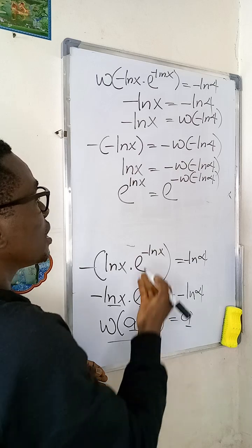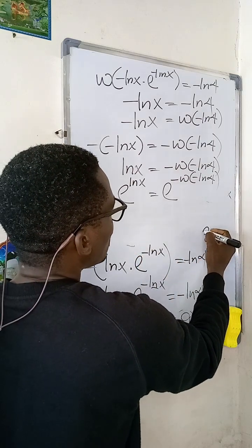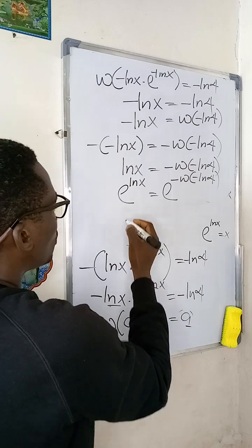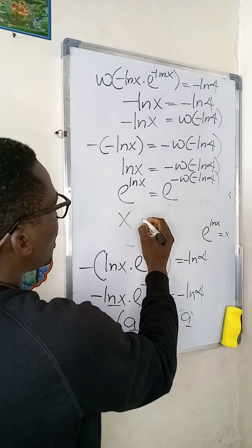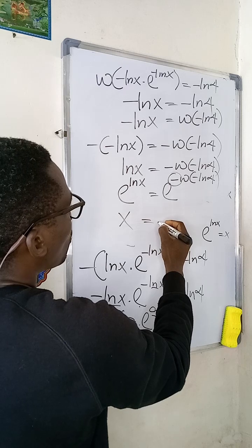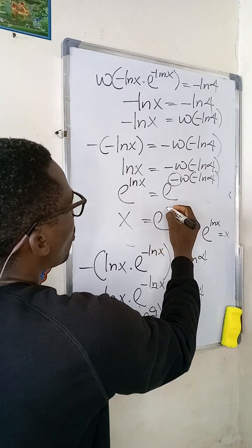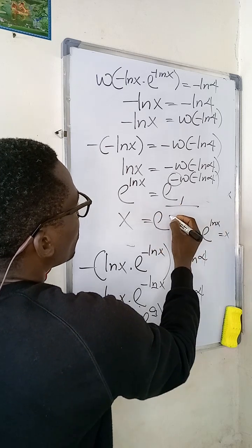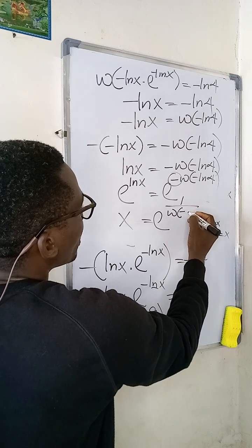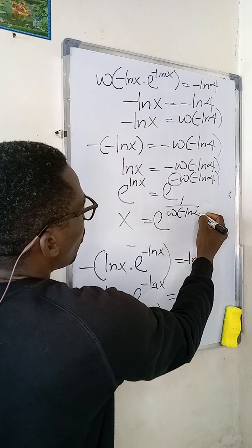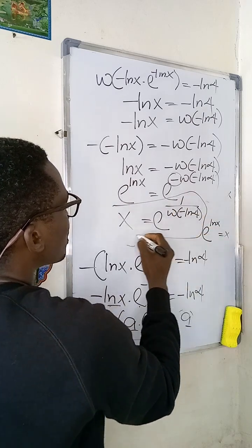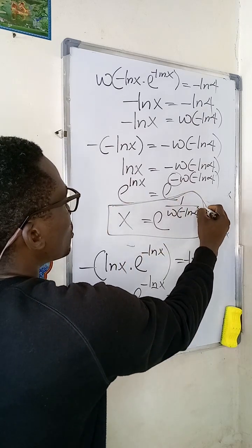Recall that e^(ln x) is simply equal to x. So x equals e to the power of negative W(negative ln(4)), which can also be written as e to the power of 1 divided by W(negative ln(4)). This is the value of x that satisfies the original expression.